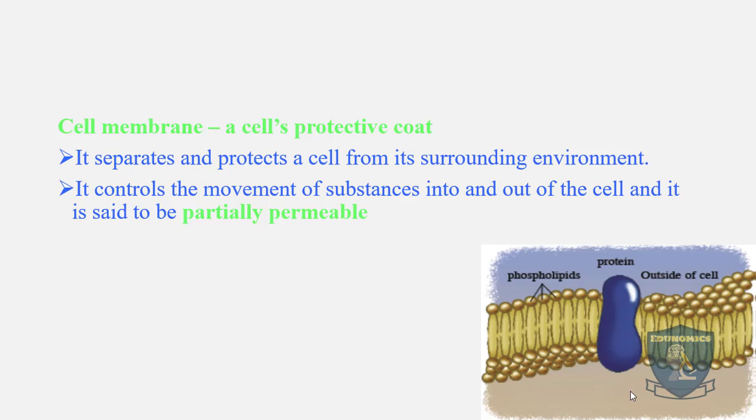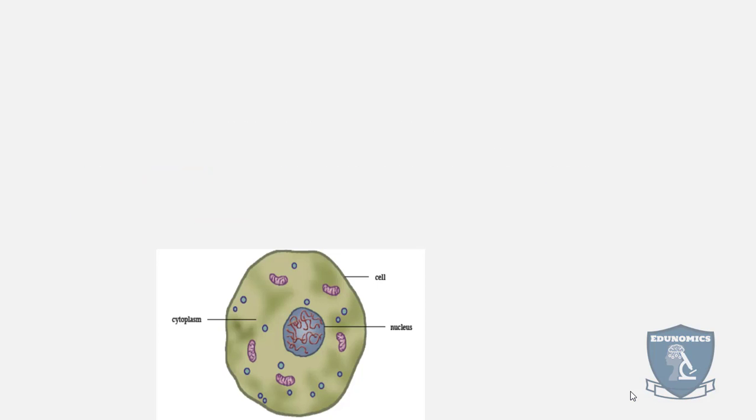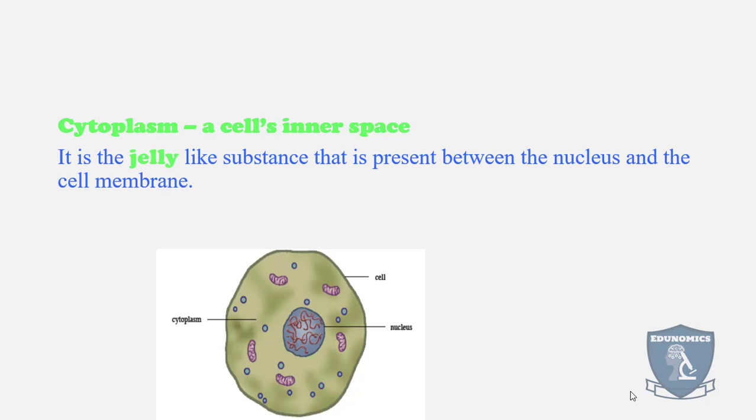Next is the cytoplasm, the cell's inner space. Technically it's not space, it's like a gelatin substance. You can call it coastal jelly. It is a jelly-like substance that is present between the nucleus and the cell membrane.